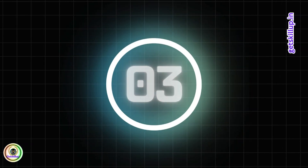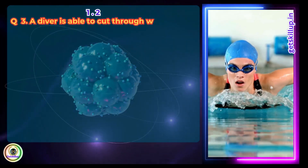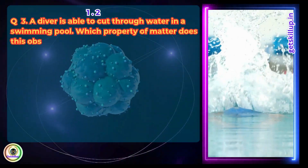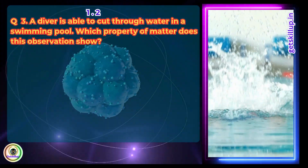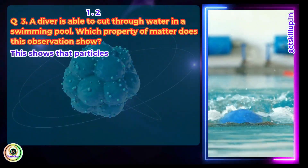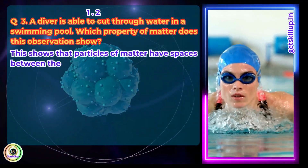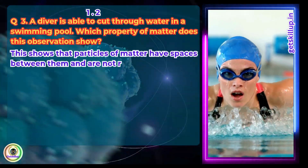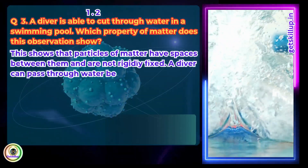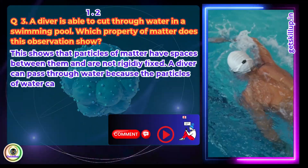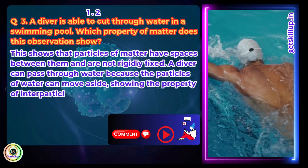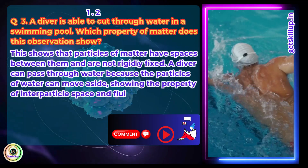Question 3: A diver is able to cut through water in a swimming pool. Which property of matter does this observation show? Answer: This shows that particles of matter have spaces between them and are not rigidly fixed. A diver can pass through water because the particles of water can move aside, showing the property of inter-particle space and fluidity in liquids.